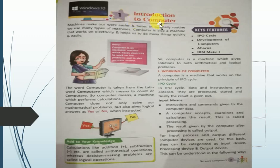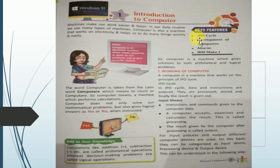This chapter is named introduction to computer. Before getting started, let's see the key features. In this chapter, you will see the IPO cycle — that is input, processing, output cycle — development of computers, Abacus and IBM make one. So this is what we will be covering in this chapter.